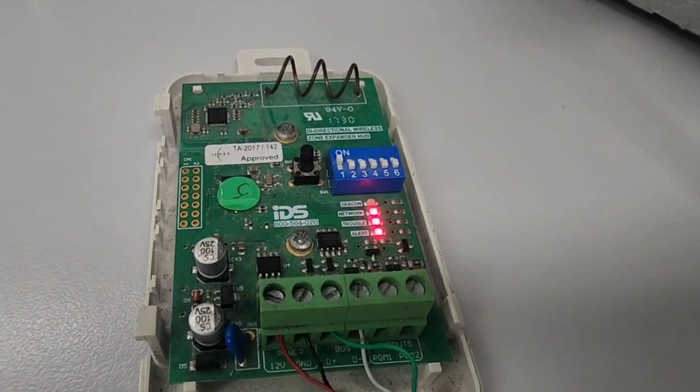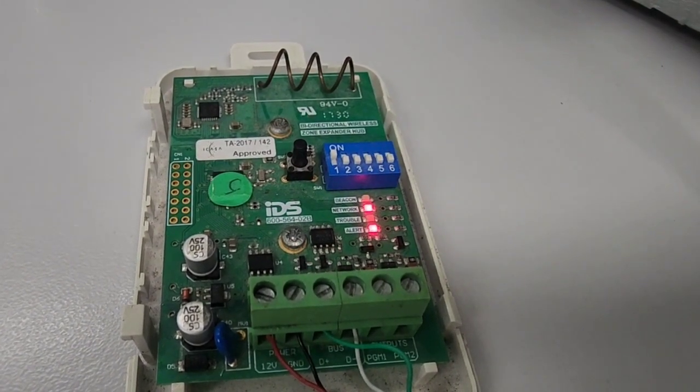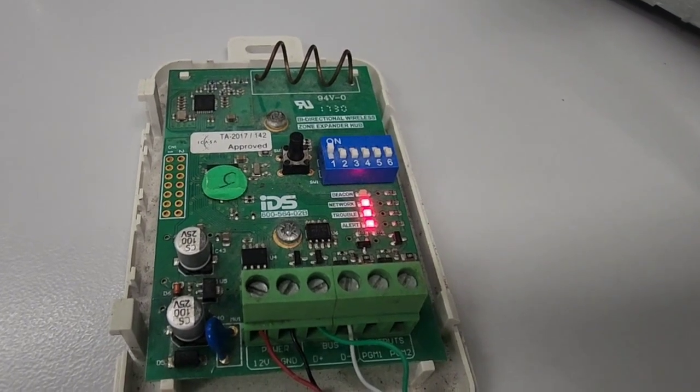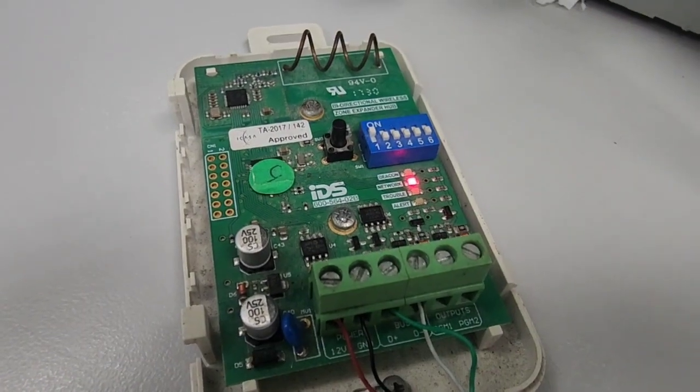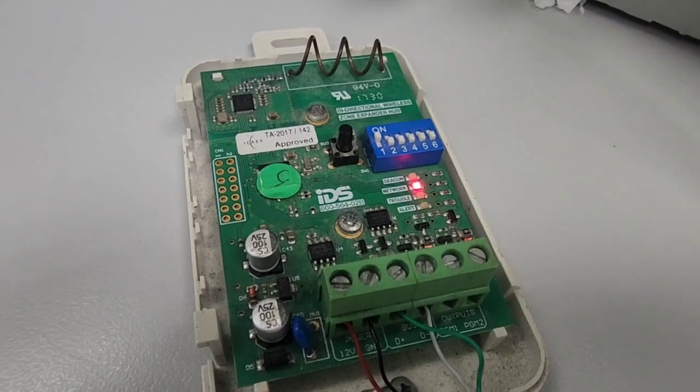Then just wait for the trouble LED to flash until it stops flashing. So you only need to have the network LED on, then the receiver is defaulted.